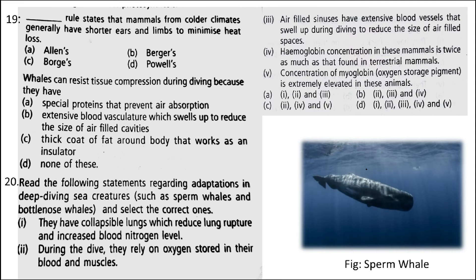Next: which rule states that mammals from colder climates generally have shorter ears and limbs to minimize heat loss? A. Allen's, B. Bergmann's, C. Bulge's, D. Powell's. The correct answer is option A. According to Allen's rule, in endothermal animals of colder areas, the extremities like feet, tail, and ears tend to be smaller as compared to their relatives in warmer regions, minimizing heat loss.